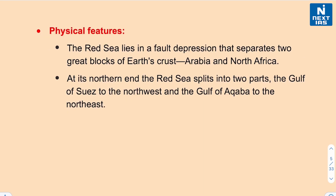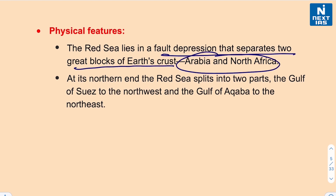As we have discussed, the Red Sea lies in a fault depression separating two great blocks of Earth's crust — Arabia and North Africa — and its northern end splits into two parts: the Gulf of Suez to the northwest and the Gulf of Aqaba to the northeast. So this was a little bit about the Red Sea.